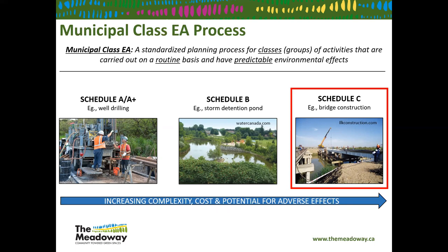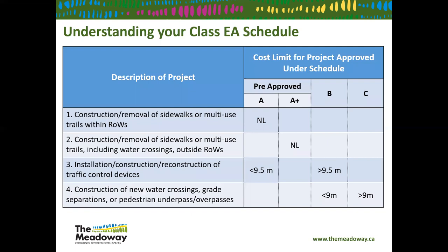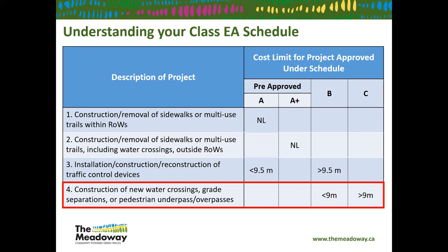Moving up in complexity, a bridge construction would be a Schedule C project — the most complex, most costly, highest potential for effects — and this is what the Meadoway falls under. It requires a much longer time frame and a comprehensive consultation program. For managers looking to determine what environmental assessment process they might trigger, it really comes down to cost. Construction or removal of a trail within an existing right-of-way has no cost limit and can be pre-approved without consultation. Because the Meadoway has six kilometers of multi-use trail and over four pedestrian bridges, it triggers the Schedule C program.